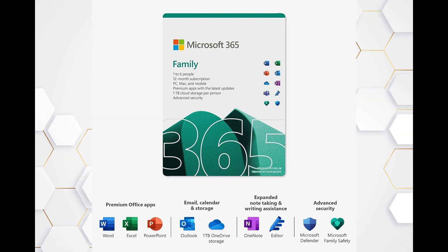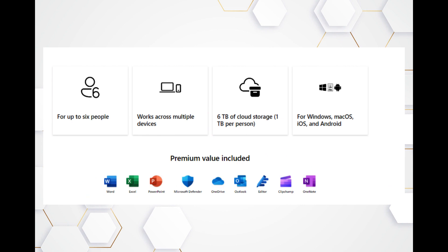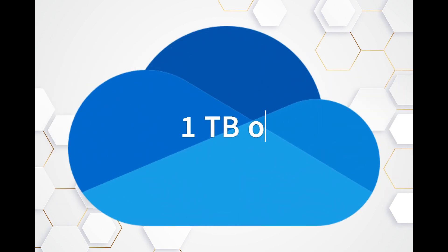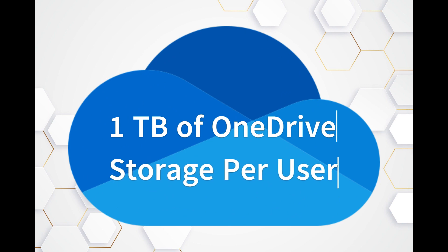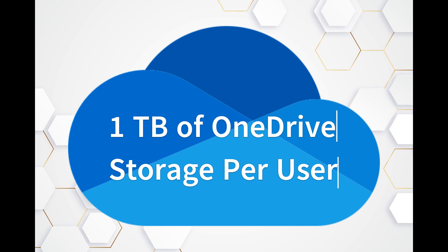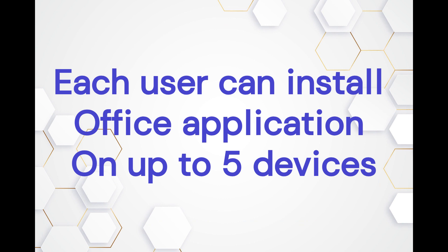That's why there's the Microsoft 365 Family plan — a superhero for households. It accommodates up to six users under the same plan. Each family member gets their own Microsoft 365 account, providing access to the full suite of applications just like the Personal plan. Each user also gets their own one terabyte of OneDrive storage, and each person can install and use it on up to five devices simultaneously with their own private data secured.